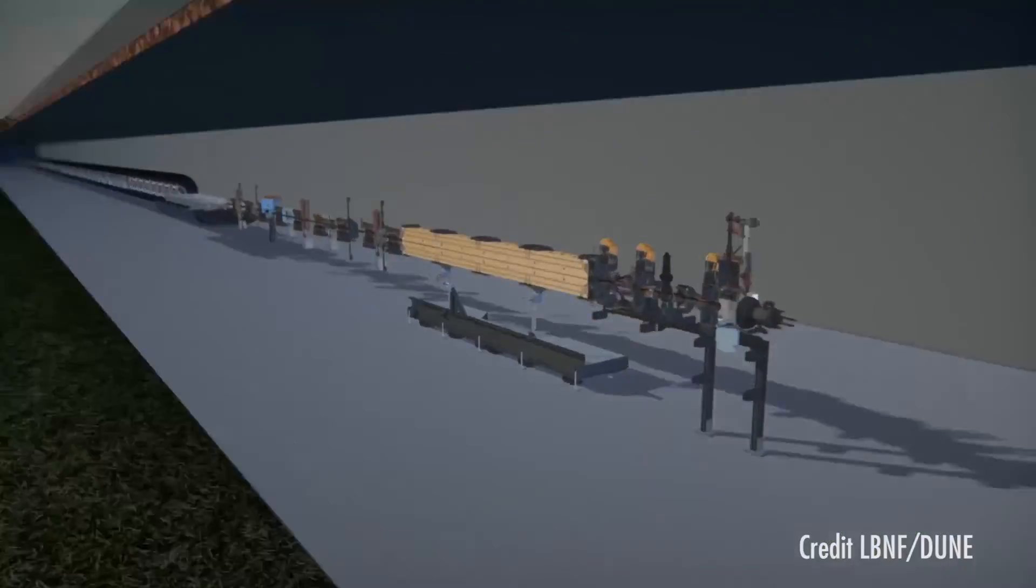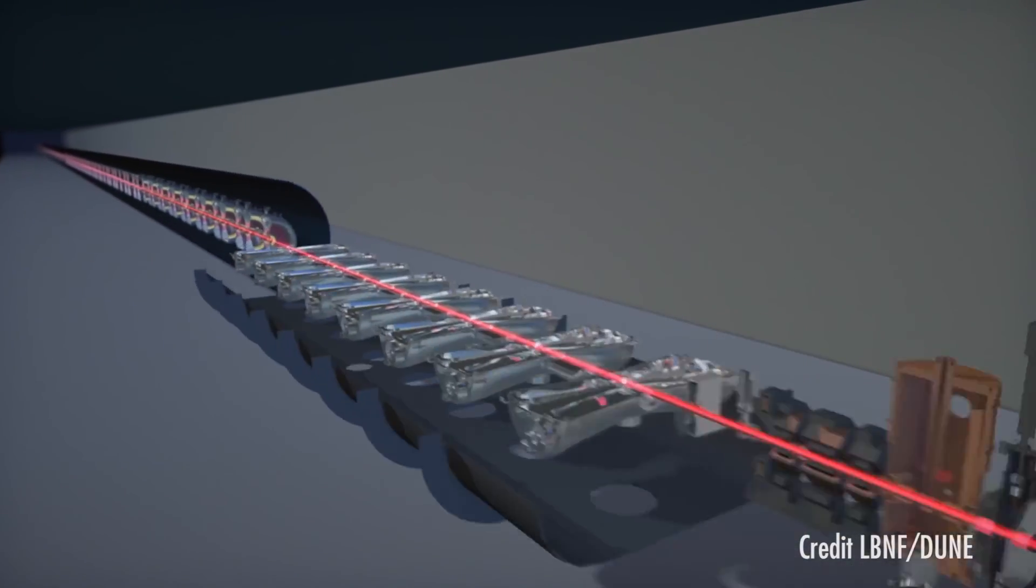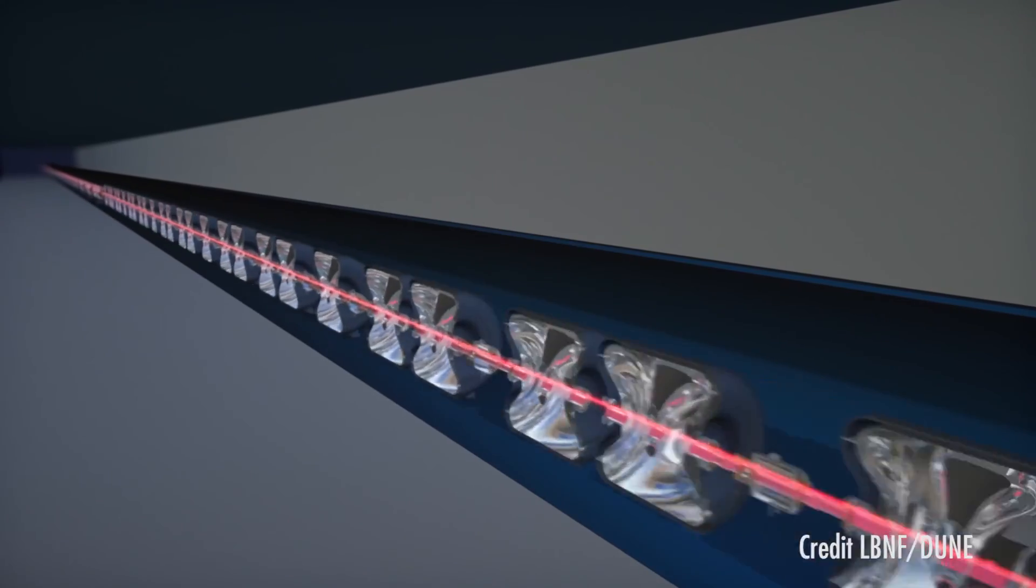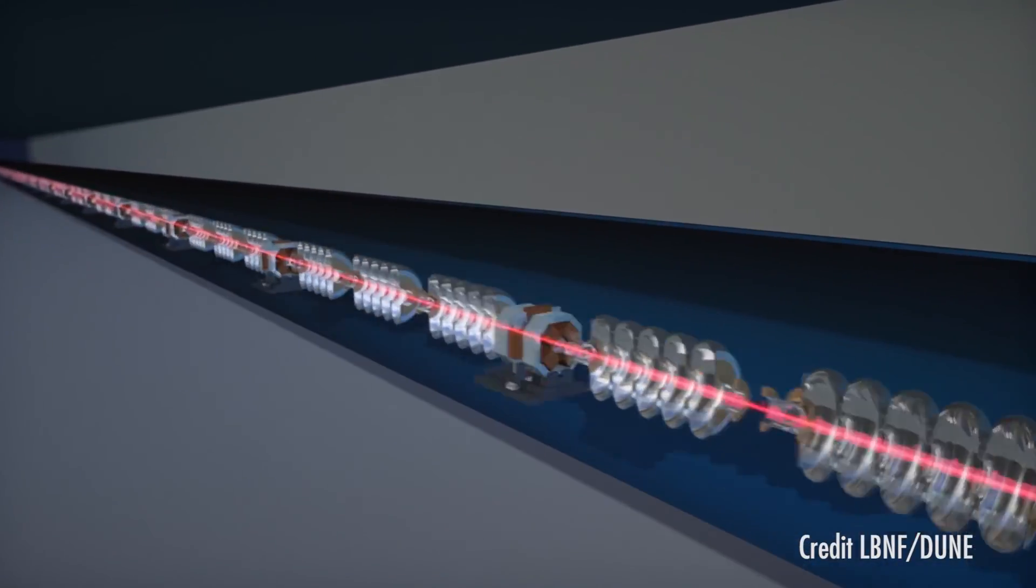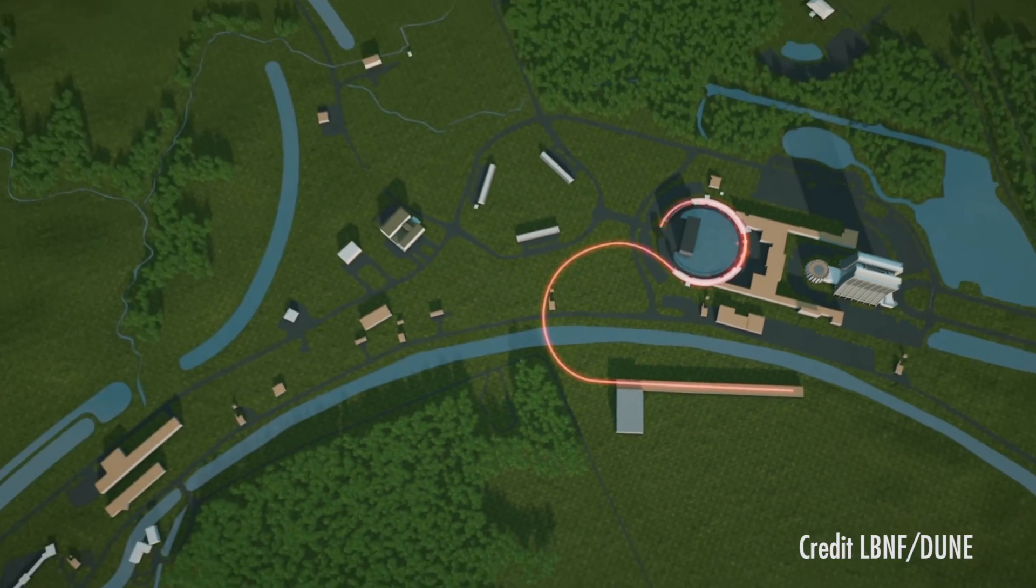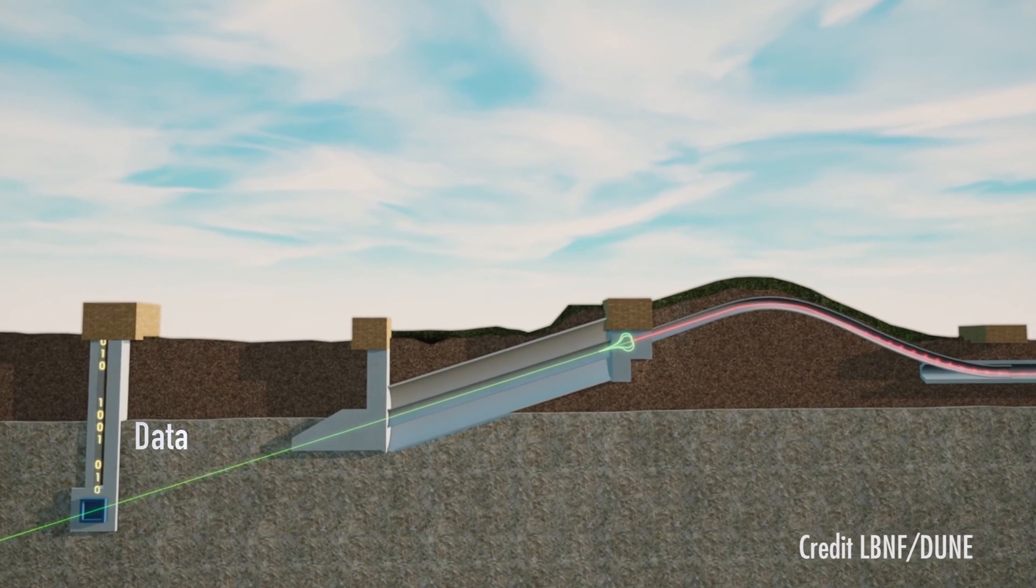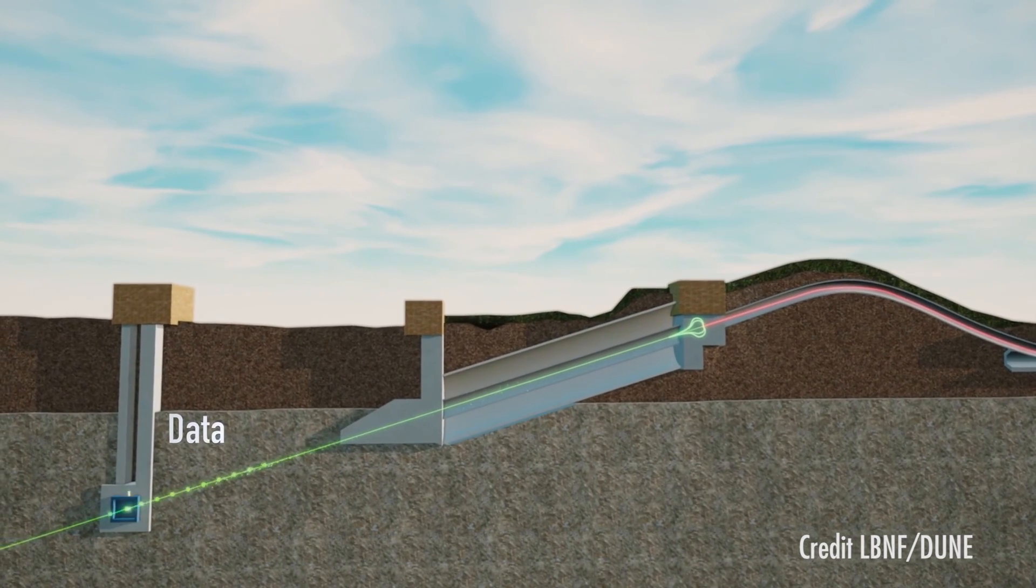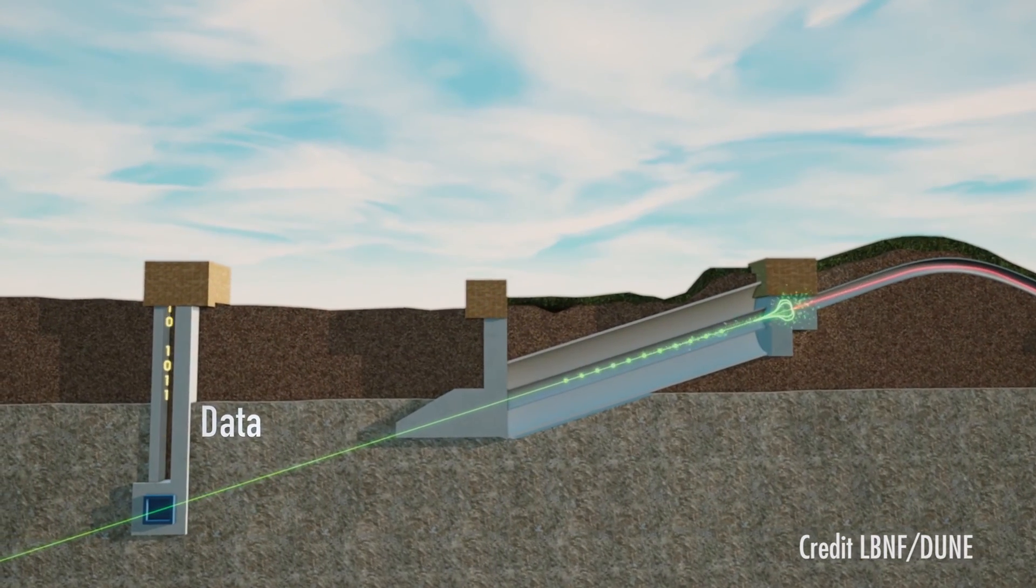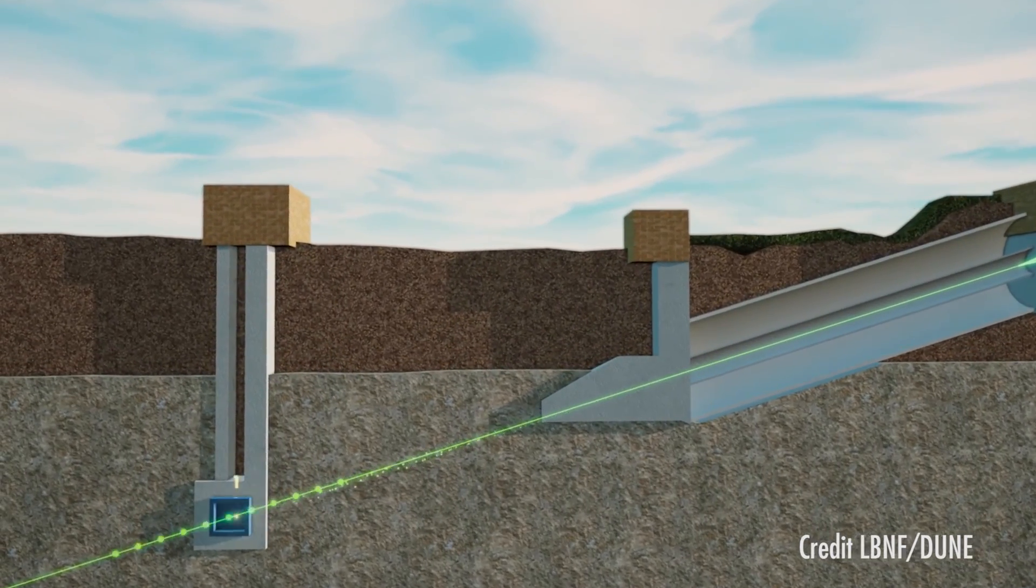The first component is we have to produce a very intense beam of neutrinos. To give you a sense of the power, to actually generate the number of neutrinos we need, we need about a megawatt of power of protons smashing into a target. So we accelerate many protons, smash them onto a target, and that produces lots of particles. We let those particles decay in a 200 meter long tunnel, and many of those particles decay to neutrinos.